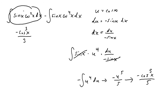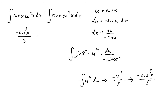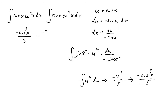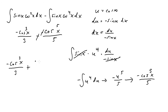We found the integral of sine x cosine squared x to be negative cosine cubed x over 3. We do have a minus sign, so minus the integral of sine x cosine to the fourth, which we found to be negative cosine to the fifth over 5. The double negatives cancel, so the final answer is negative cosine cubed x over 3 plus cosine to the fifth x over 5, plus C.